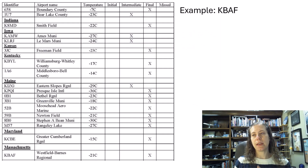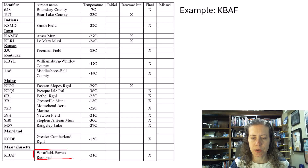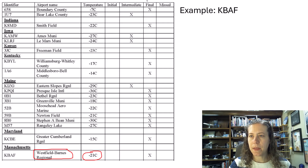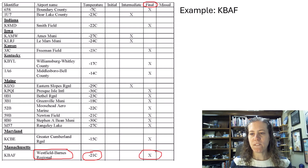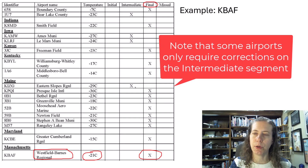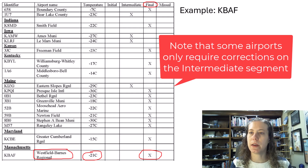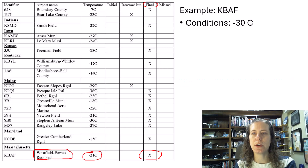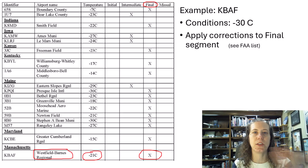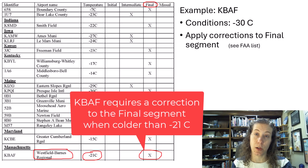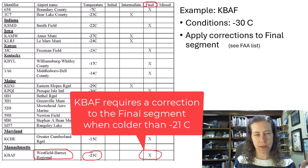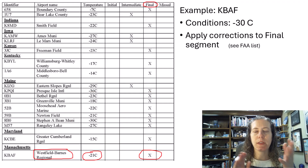Let's do an example using the airport we looked at earlier — Westfield Barnes Regional Airport in Massachusetts. Negative 21°C is our triggering point, and the FAA list says it's the final approach segment where we apply the correction. We're going to pretend it's negative 30 degrees Celsius for this example. We're going to apply the corrections to the final approach segment only, meaning we only apply corrections to altitudes that occur during that final segment.